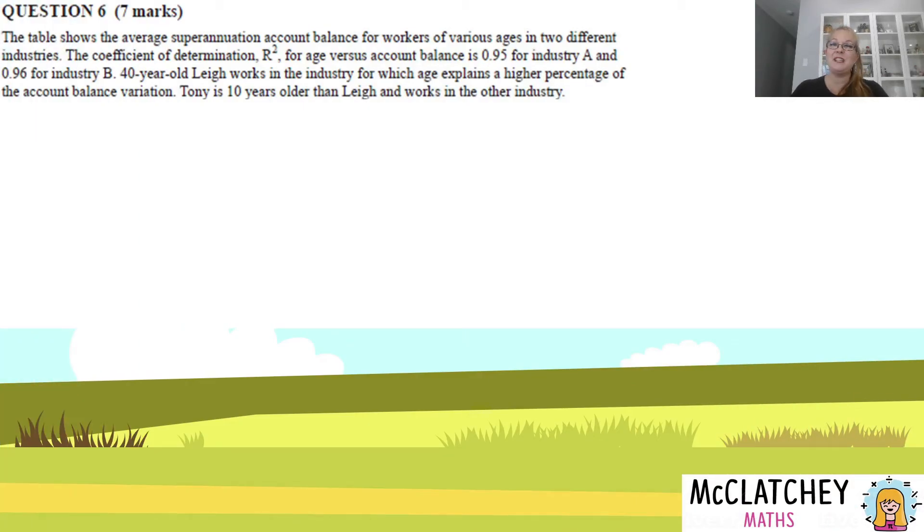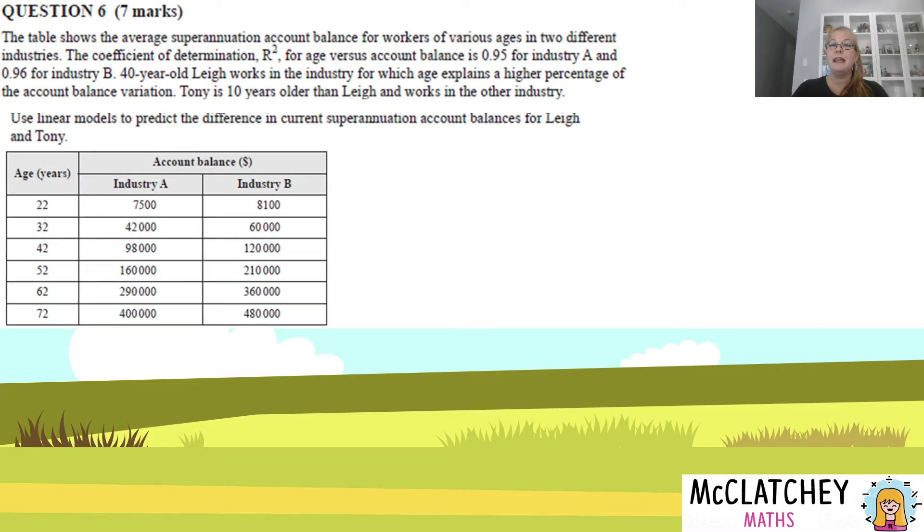Let's get into question 6 worth 7 marks. The table shows the average superannuation account balance for workers of various ages in two different industries. The coefficient of determination R squared for age versus account balance is 0.95 for industry A and 0.96 for industry B. 40-year-old Lee works in the industry for which age explains a higher percentage of the account balance variation. Tony is 10 years older than Lee and works in the other industry. Using linear models, predict the difference in the current superannuation account balances for Lee and Tony.